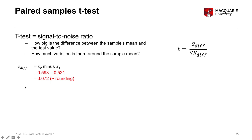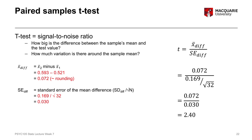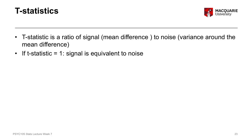That's the same as what we saw in the summary of the difference scores a couple of slides ago. The standard error of the mean difference we can calculate as the standard deviation of the difference, which is 0.069, divided by the square root of our sample size, which is 32. That gives us a standard error of the difference of 0.030. Plugging those numbers into our t-test formula, we end up with a t-statistic of 2.4.